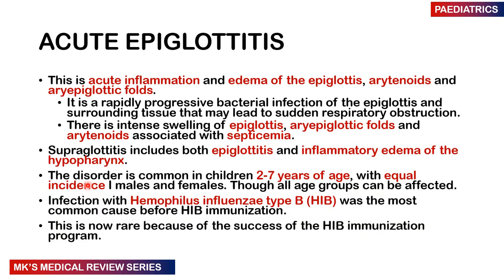When you talk about acute epiglottitis, this is simply an acute inflammation and edema of the epiglottis, the arytenoids, as well as the aryepiglottic folds. It's a rapidly progressive bacterial infection of the epiglottis and surrounding tissue that may suddenly lead to respiratory obstruction. There is intense swelling often associated with septicemia. Supraglottitis includes epiglottitis as well as inflammation or edema of the hypopharynx.